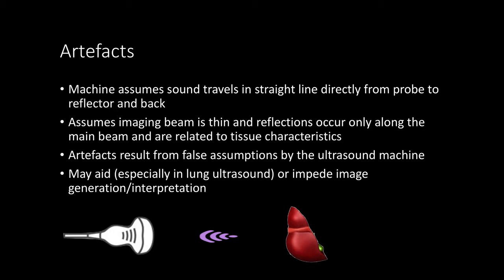Artifacts happen because these two assumptions do not hold true, and so the ultrasound machine ends up generating an image that is different from what's really going on inside the patient. Knowing how these artifacts happen can help us recognize them, get rid of them when they are unwanted, or, as is the case in lung ultrasound, make diagnoses.